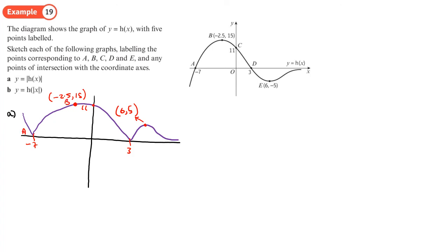Probably should put the letters on: a, b, c, d, e. And then in part b, the modulus is just around the x. So we take the positive part of the graph, which is this, and we're going to reflect it.